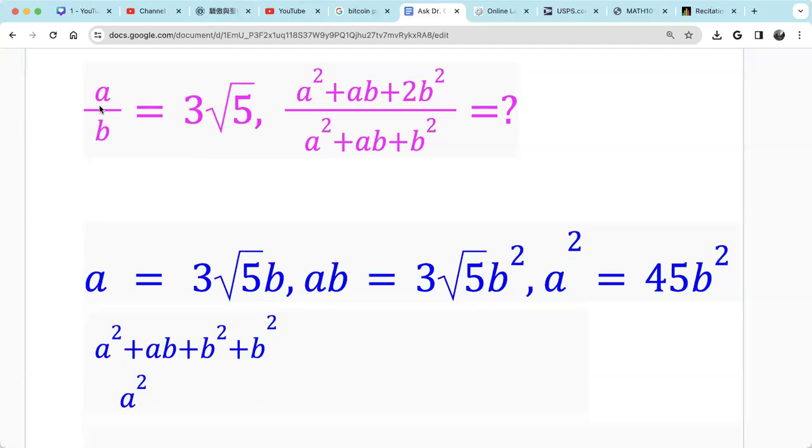Let's see this question. We're given the ratio of A and B is 3 times the radical of 5, so it's an irrational number.